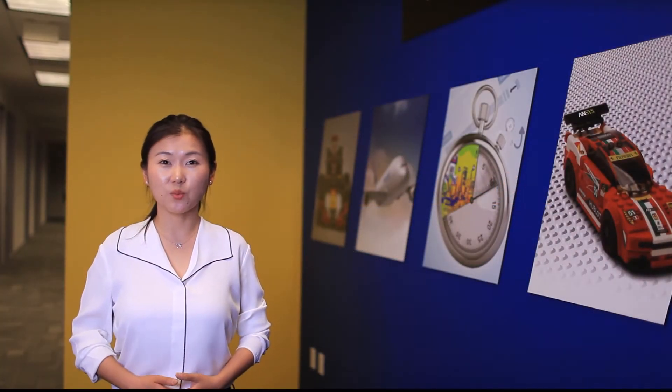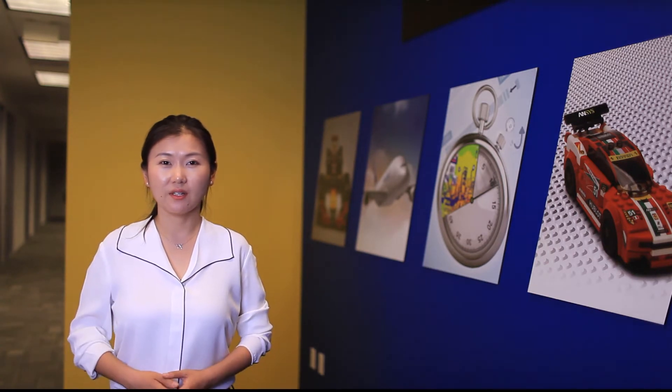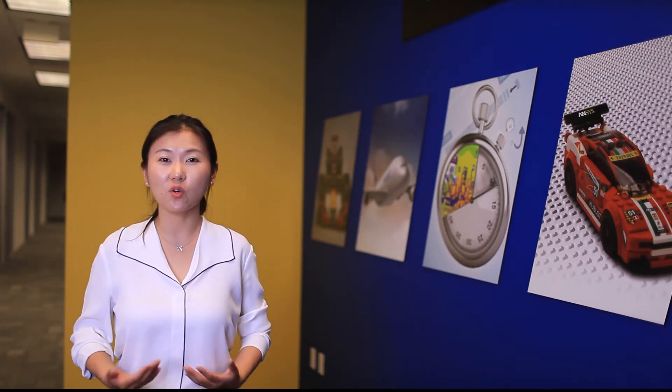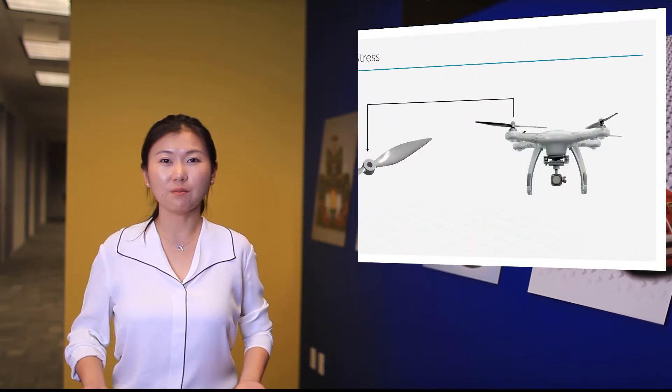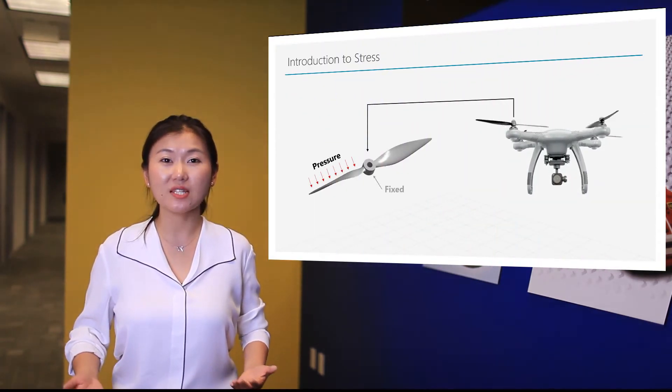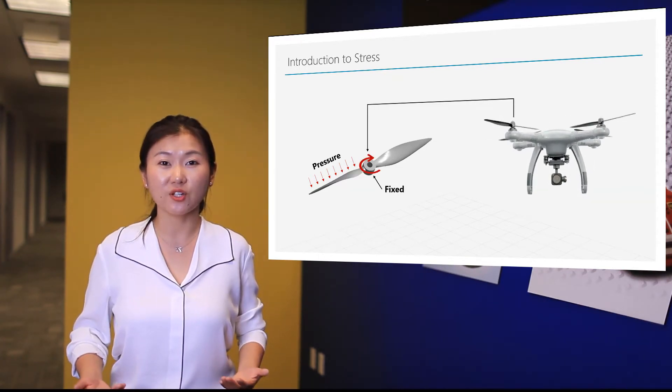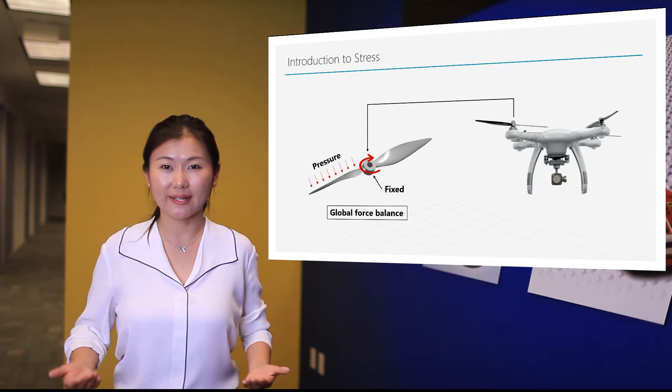Most of us are familiar with the concept of external force conditions over an object, and we're familiar with the rule of force balance. For example, for this drone blade, we have a pressure on the blade and a fixed boundary condition at the center. We know that the reaction force from the fixed boundary condition will balance out the external load.